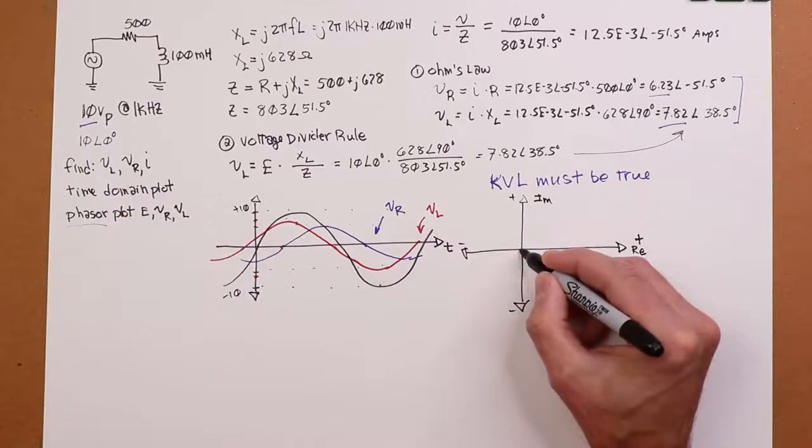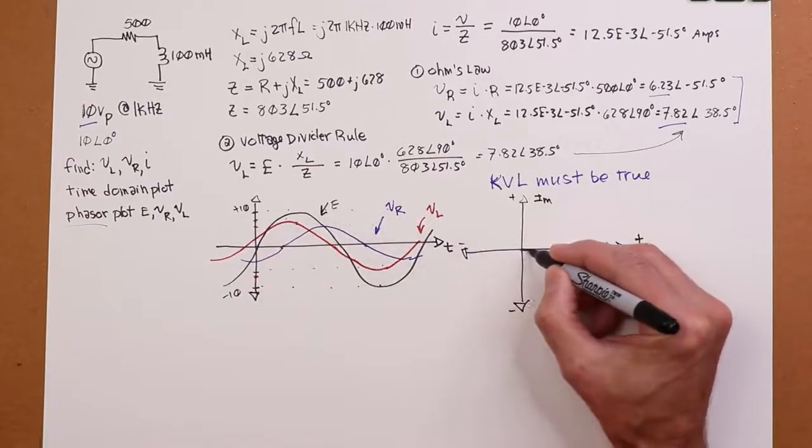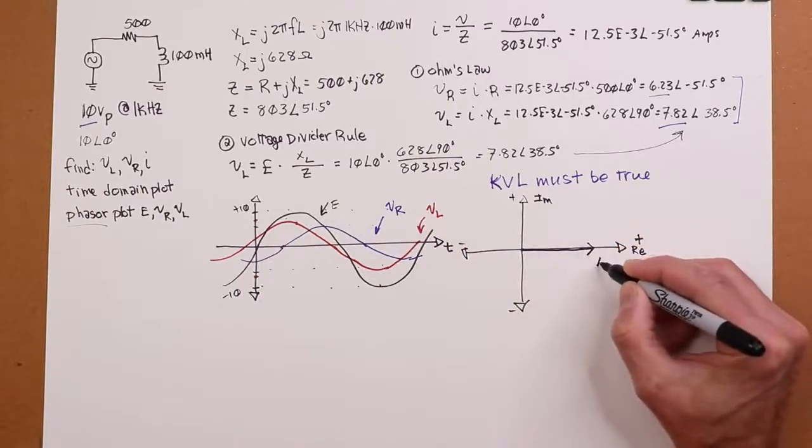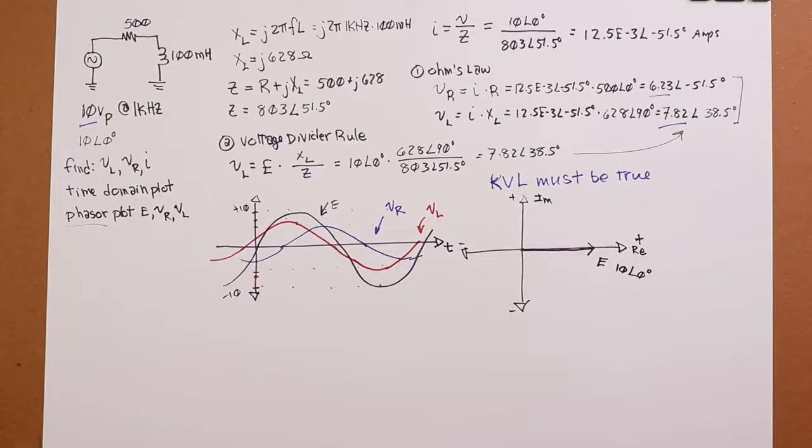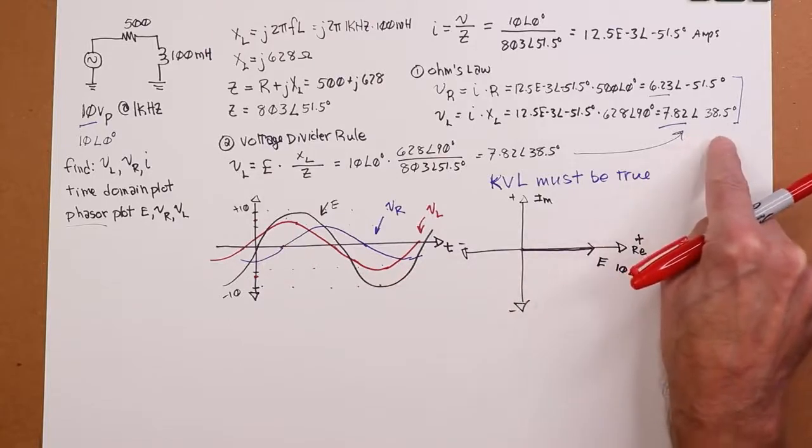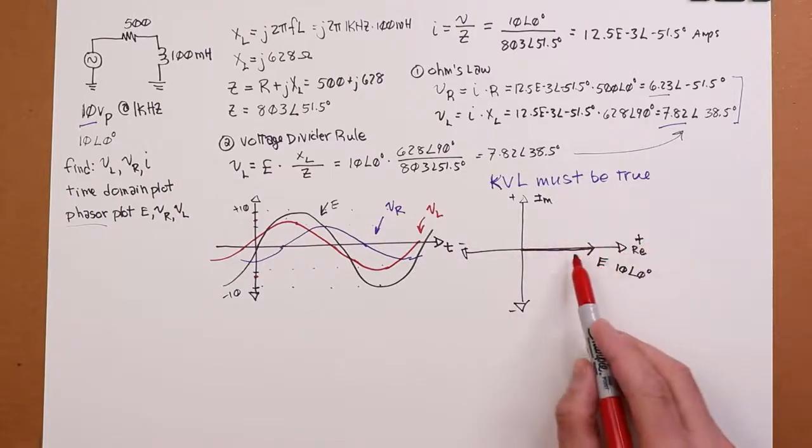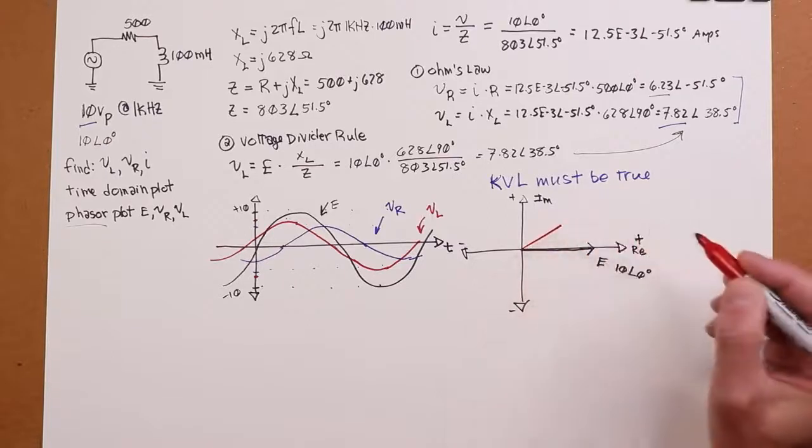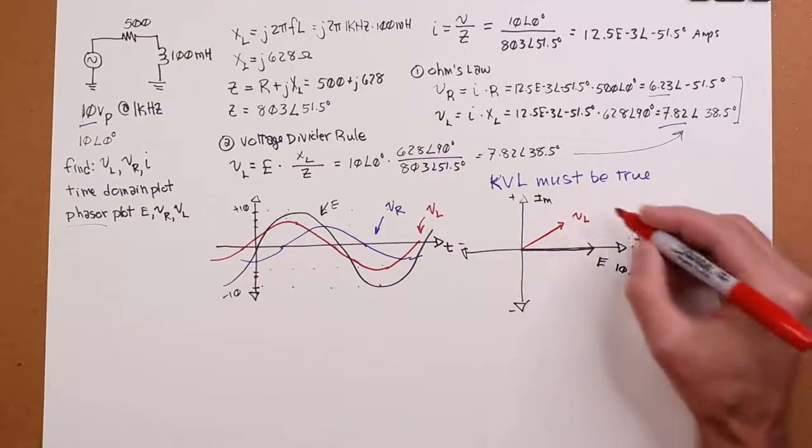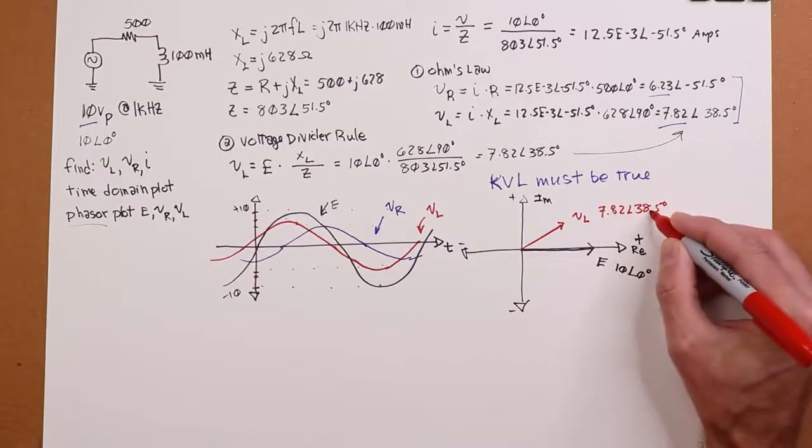So, E. I'm going to keep my colors the same here. E is this guy. So, here's, we'll just say that's 10 units. 10 units. Angle of zero. Now, my VL. The VL, we said, is 7.82 at an angle of 38.5. So, you know, 45 would be like this. 38.5 is a little bit shallow compared to that. And it's maybe about that long. So, we're looking at something that's, you know, maybe like this. 7.82 in length. Angle of 38.5 degrees.